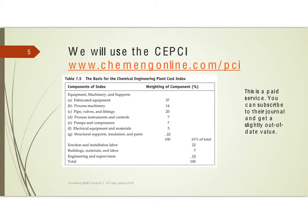For my course, we use the CEPCI. You can get this from Chemical Engineering Online, but unfortunately it's a paid service. However, you can subscribe to the journal and get a slightly out-of-date value — it's two months delayed — and for the purposes of class, that's more than adequate.